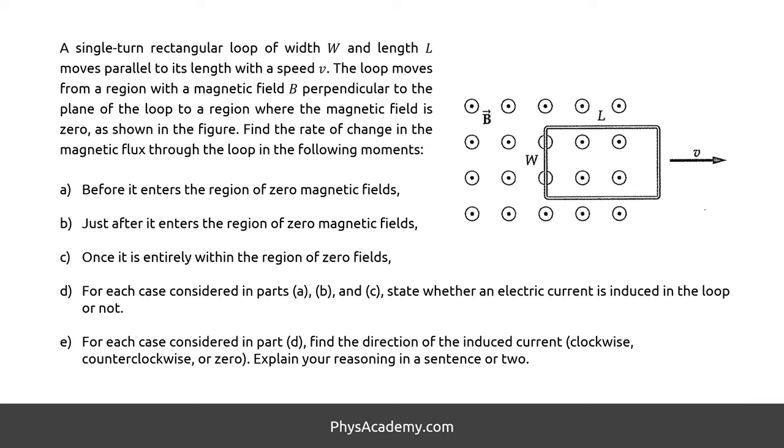Let's read and analyze the problem together. A single-turn rectangular loop of width W and length L moves parallel to its length with a speed V. The loop moves from a region with a magnetic field B perpendicular to the plane of the loop to a region where the magnetic field is zero, as shown in the figure.